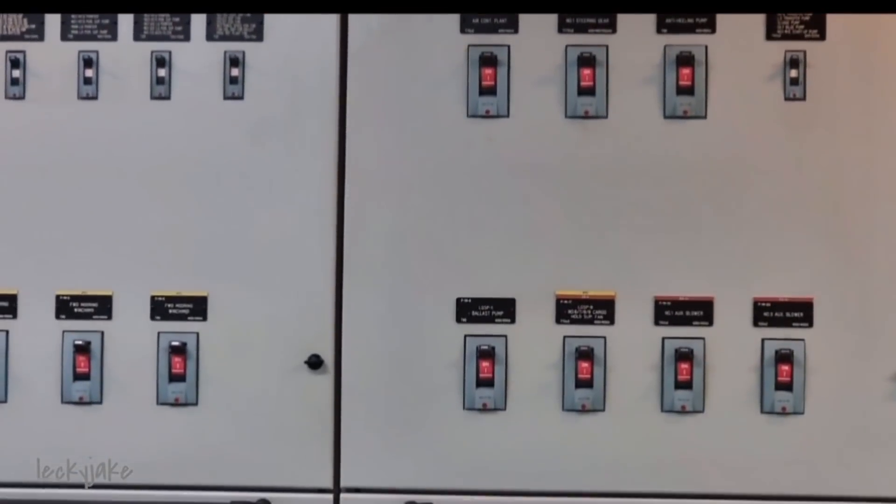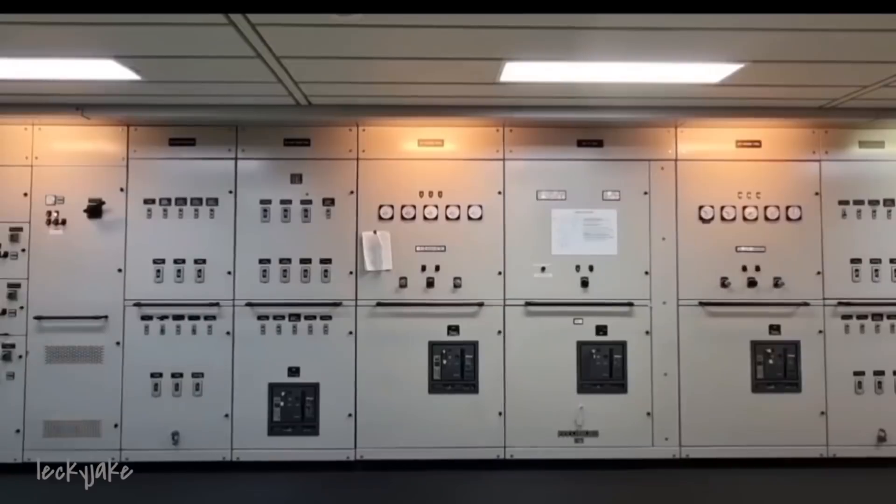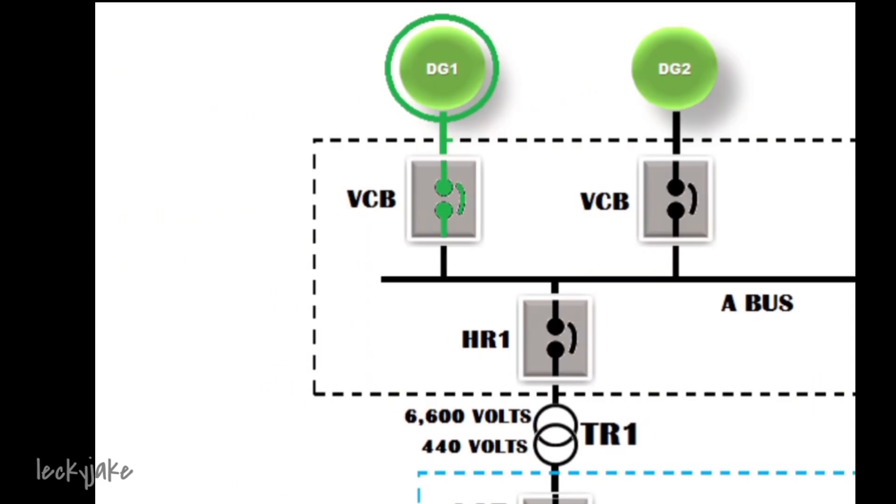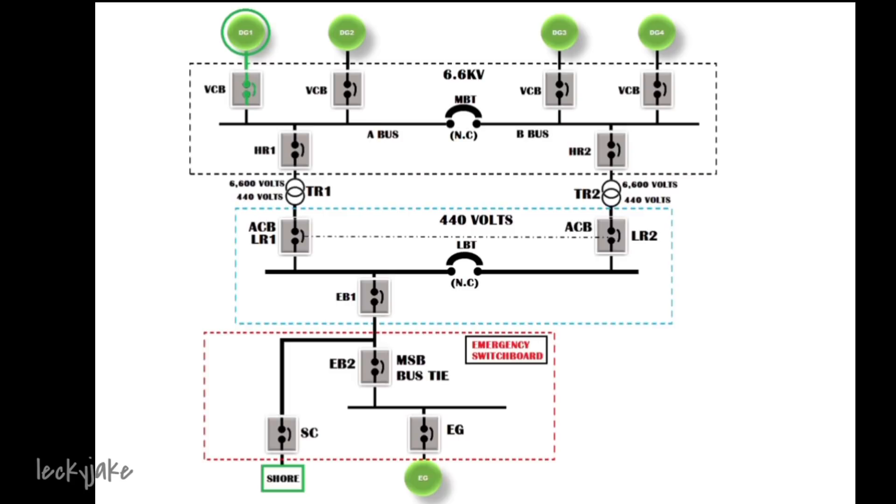So here's the more detailed explanation regarding the line diagram of our power management system. Let's say for example that the DG1 is the running generator. The VCB will be in closed position hence the DG1 will feed 6600 volts into the main switchboard. The main bus tie which is normally closed will also link the two bus bar, bus A and bus B. Hence in this setup, the whole bus bar has a 6600 volts supply. The number of running generator requires depends on the demand.